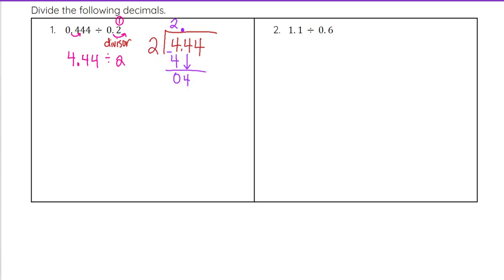2 goes into 4 two times, so we put a 2 next. And then 2 times 2 is 4. Again, we end up with 0. And then we can bring down that next 4. 2 goes into 4 two times. 2 times 2 is 4. And this time we get 0.